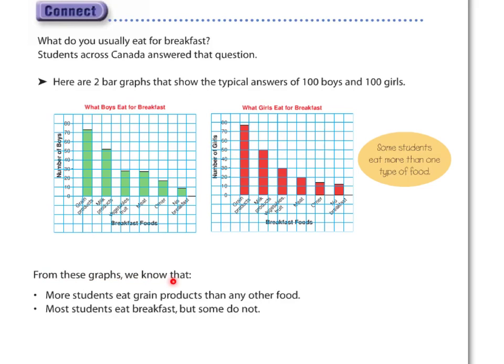From both of these graphs, we know that more students eat grain products than any other food for breakfast, probably toast or cereal. Most students eat breakfast, but some don't eat breakfast at all. Not very many.